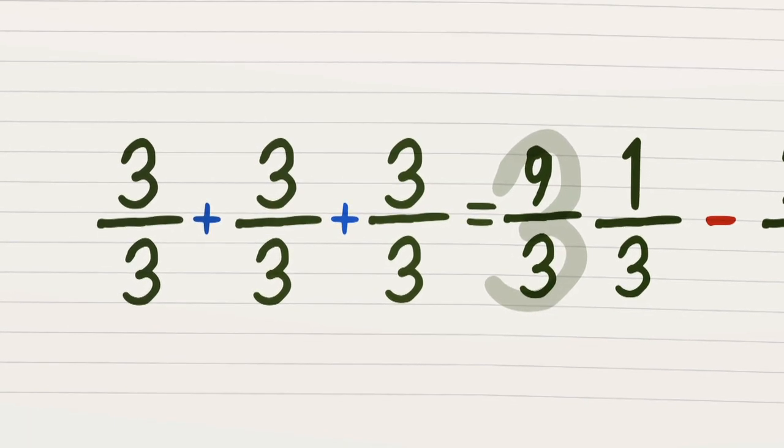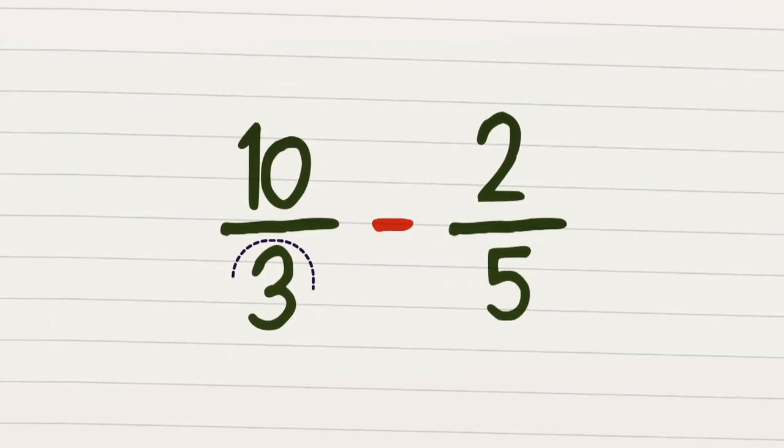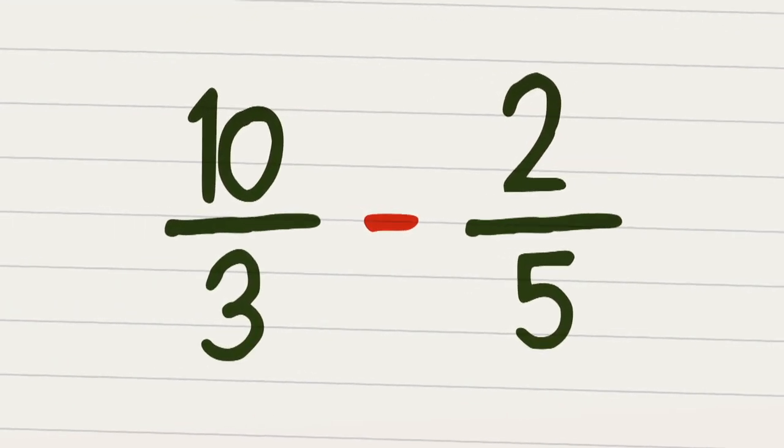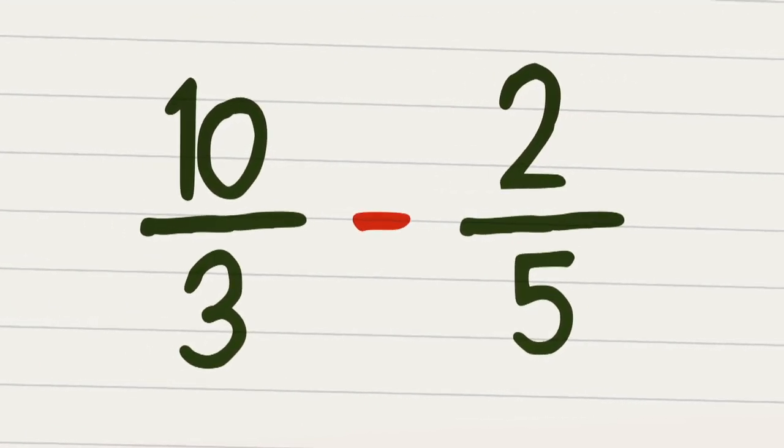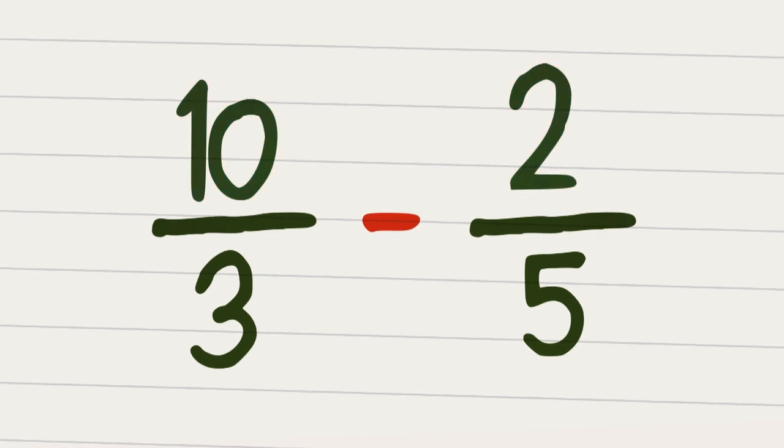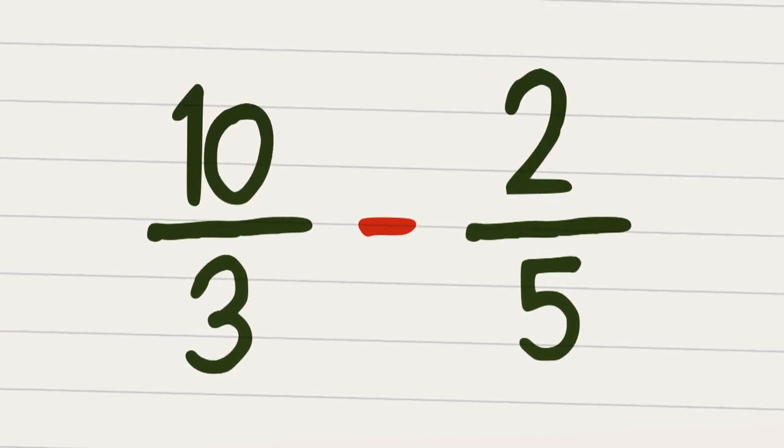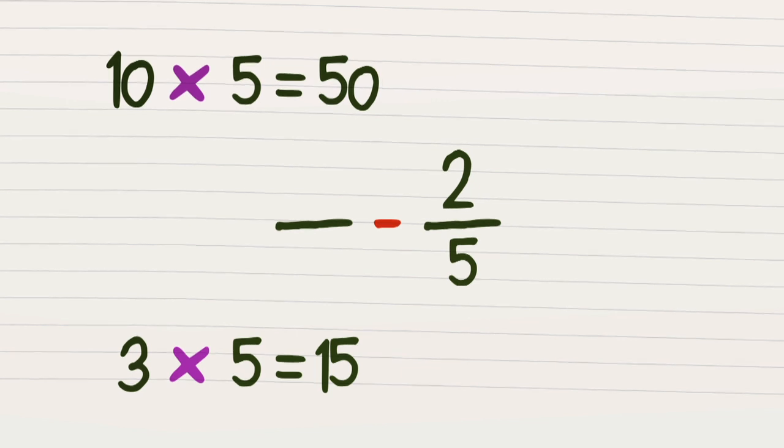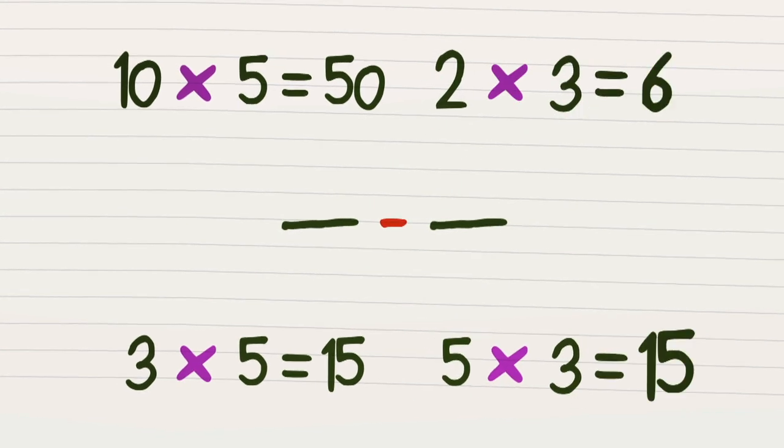But now the fractions don't have the same bottom number, so we must discover the lowest common denominator. Remember what we do to bottom, do to the top. And when the bottom numbers match, then we're ready to stop. So the 10 over 3 is multiplied by 5, and the 2 over 5 is multiplied 3 times.